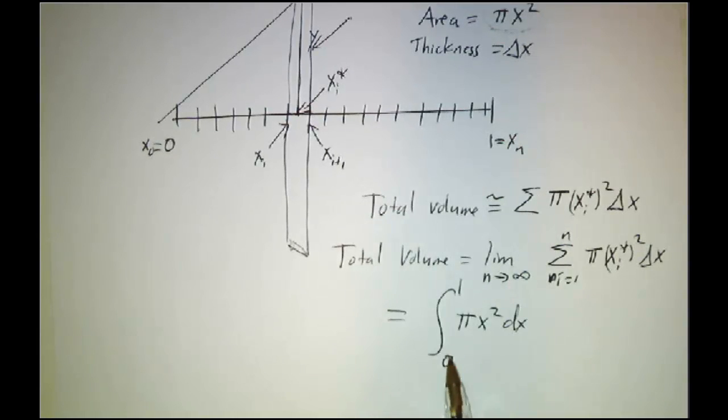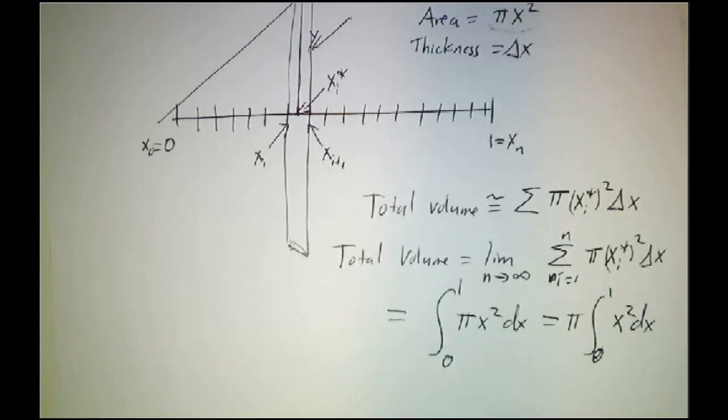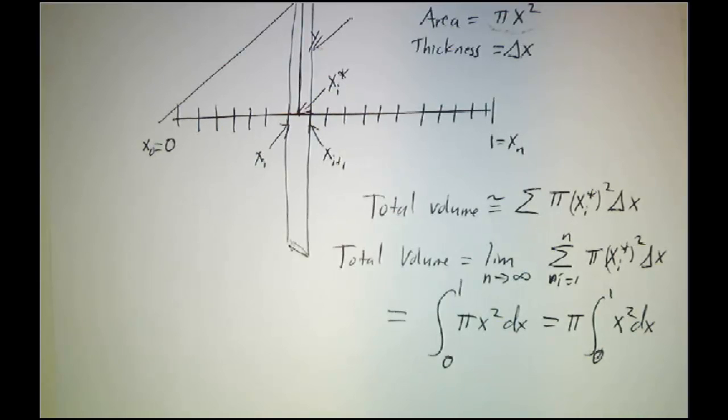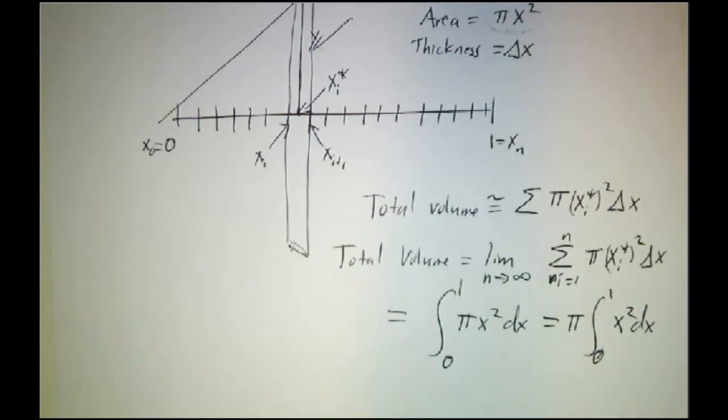So now we've seen the integral from 0 to 1 of x squared dx come up three times. It came up as the area under a parabola. It came up as the distance traveled. And here it comes up as a volume with a factor of pi in there.